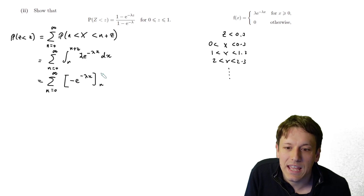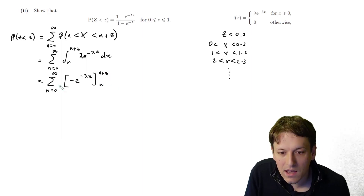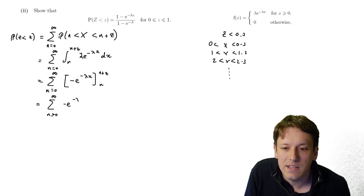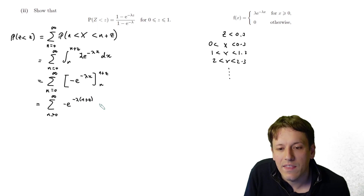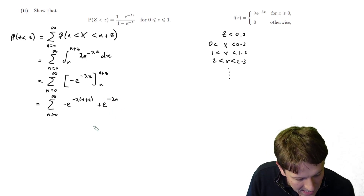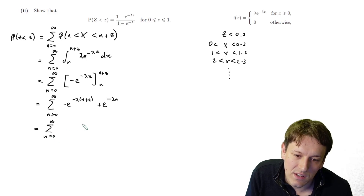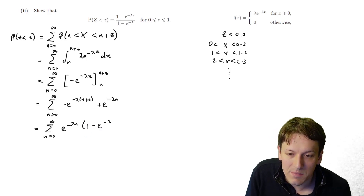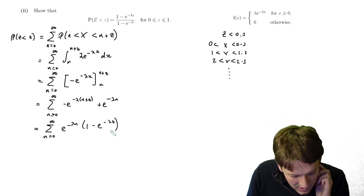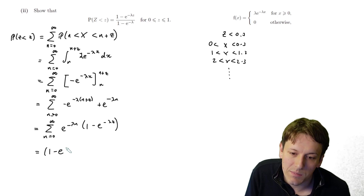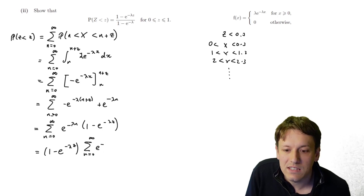Computing that integral gives −e^(−λx) between n and n+z, so the sum becomes the sum from n=0 to infinity of (−e^(−λ(n+z)) + e^(−λn)). Factorising out e^(−λn) as before, each term becomes e^(−λn)(1 − e^(−λz)), and since the second bracket doesn't depend on n, we can take it outside the sum.